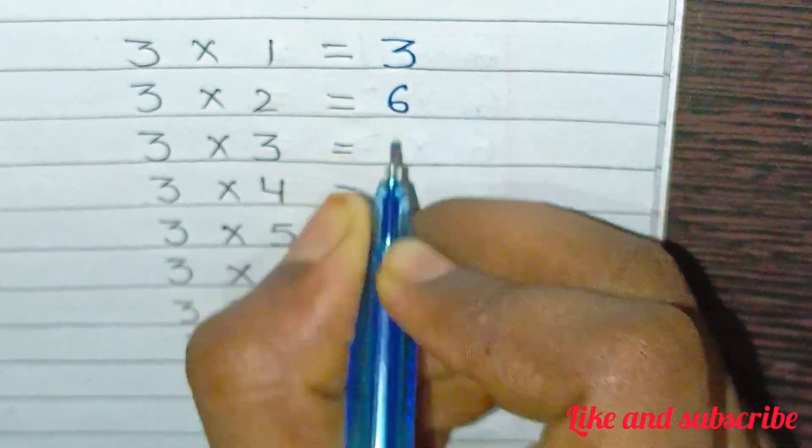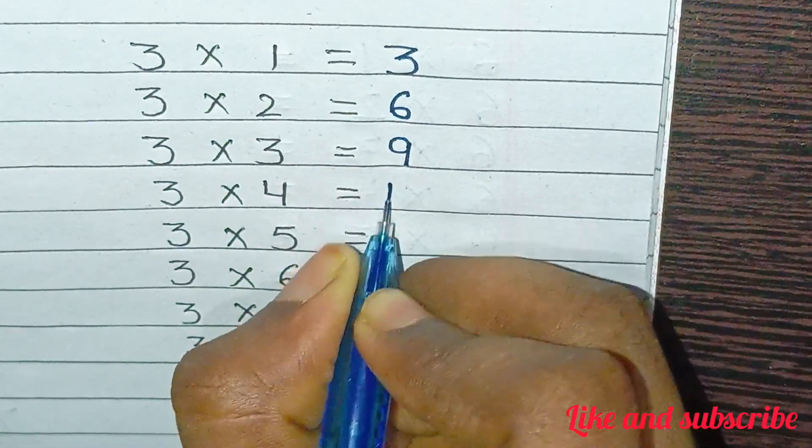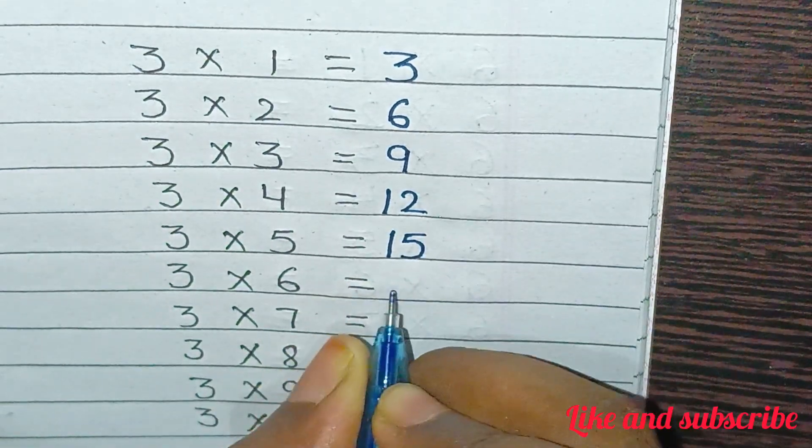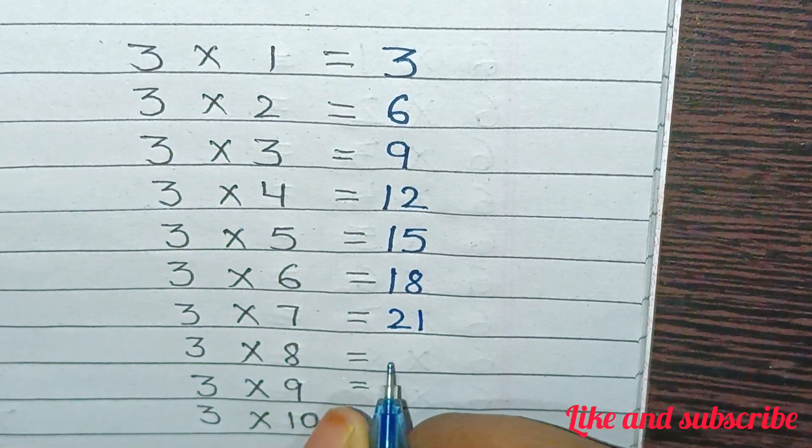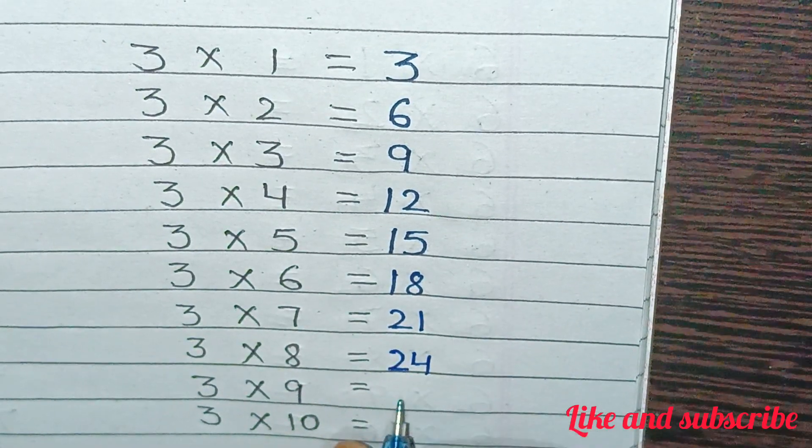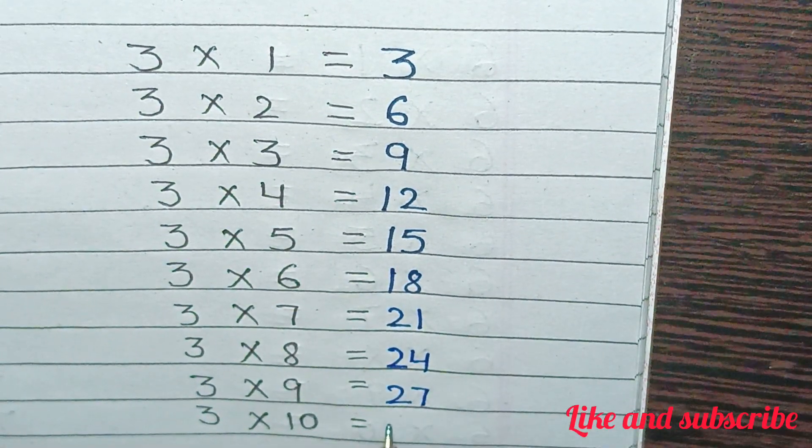3×1=3, 3×2=6, 3×3=9, 3×4=12, 3×5=15, 3×6=18, 3×7=21, 3×8=24, 3×9=27, 3×10=30.